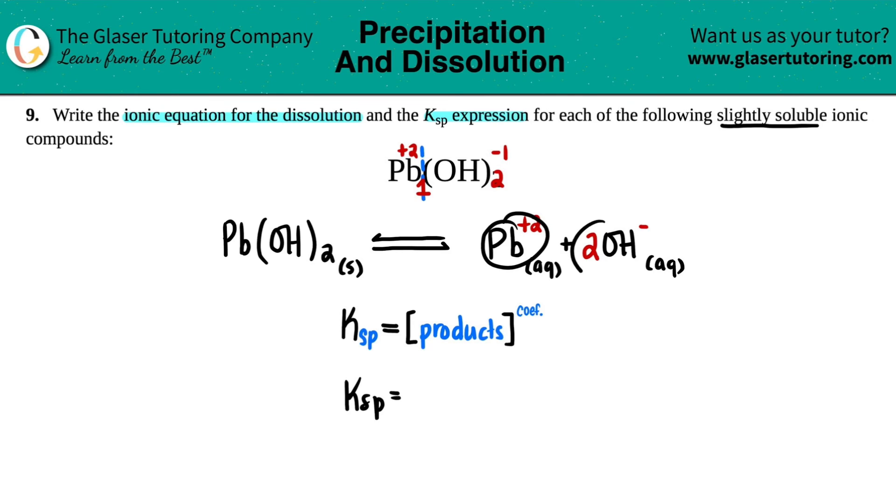So I just look for that product side. Ksp equals, there's two ions on the product side. So I have product concentration of Pb²⁺ or plus two, whatever you want to say. Maybe I'll just switch it up just to show you. It doesn't matter which one you write. Times the concentration of OH⁻.